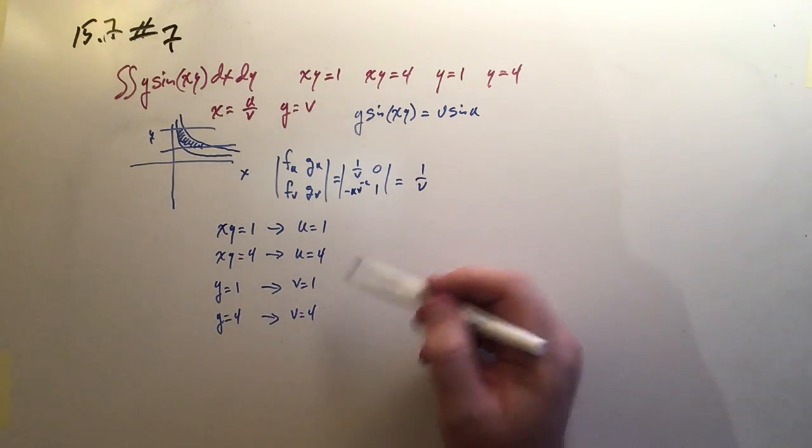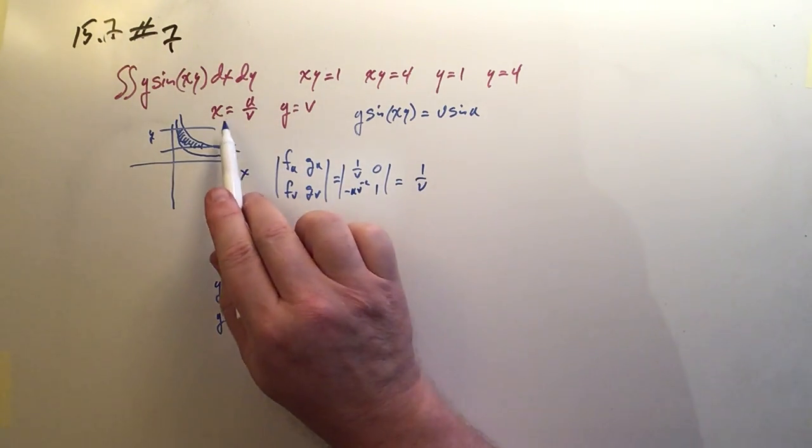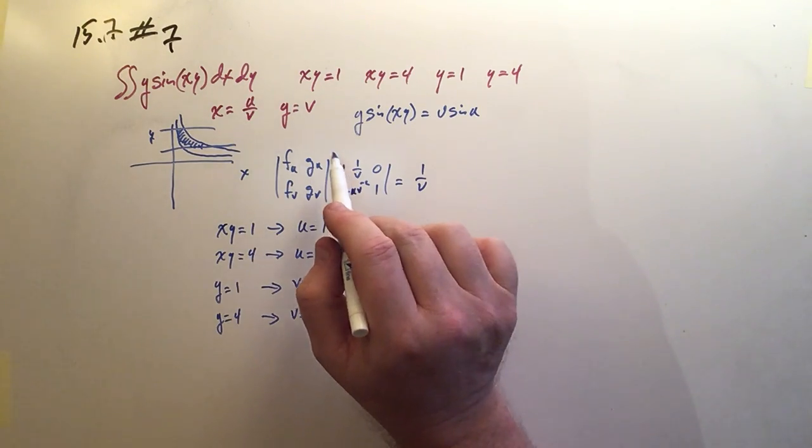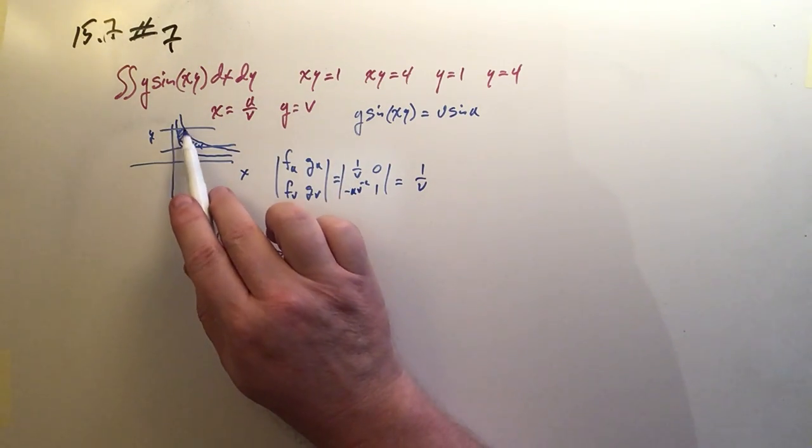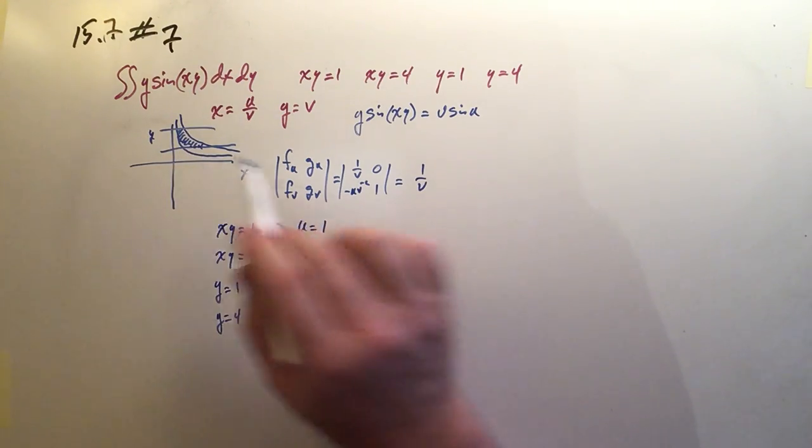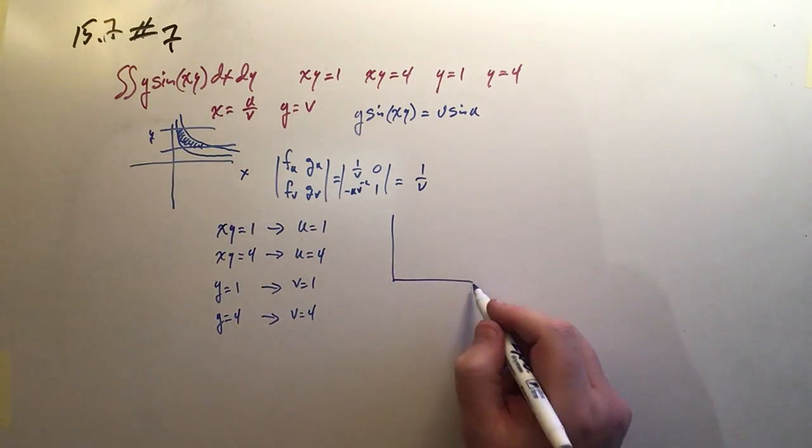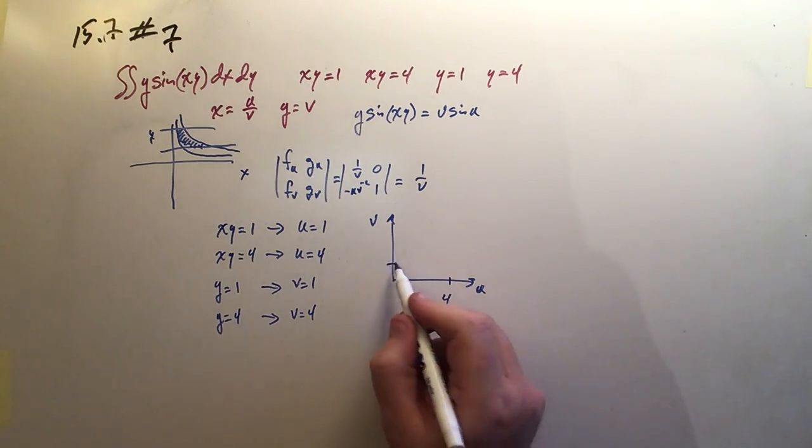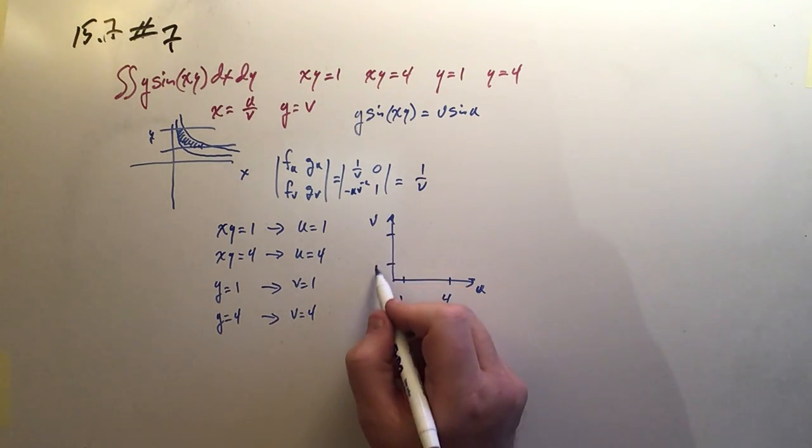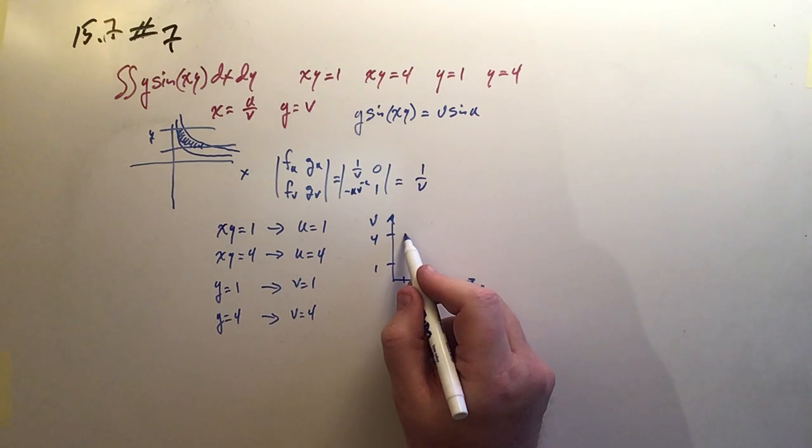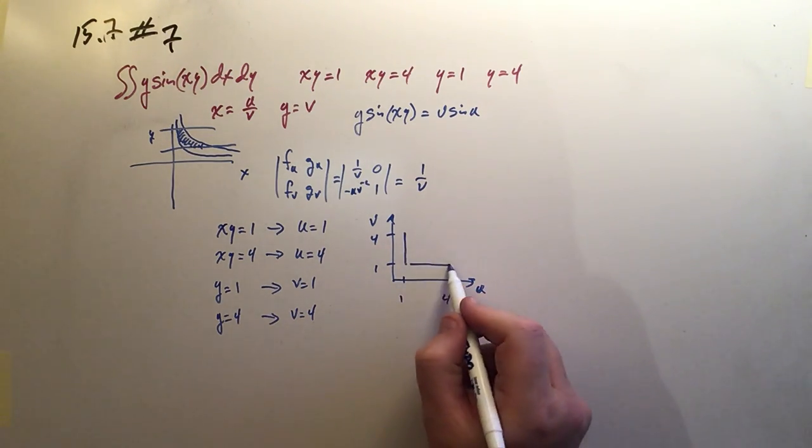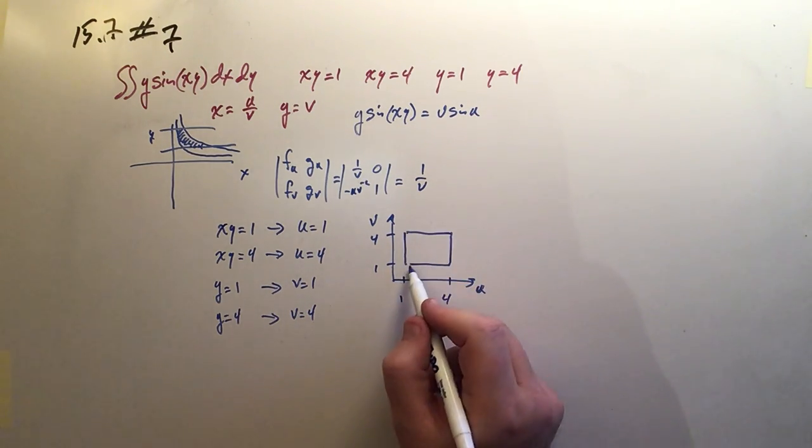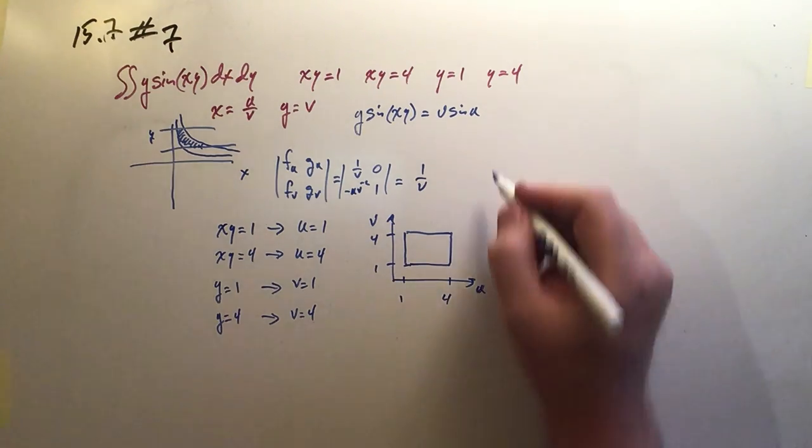So while we didn't really get to take credit for what a great transformation this is, look at what he did. It took this horrible area in the plane, and it made this out of it. This is u, and this is v, and basically between 1 and 4, it made a little square. This is it. This is the region that we're going to integrate within.